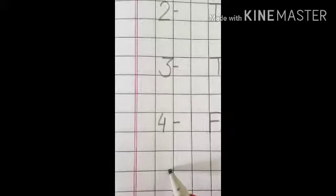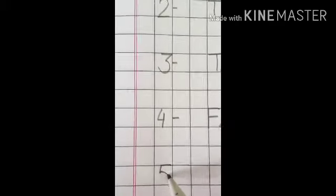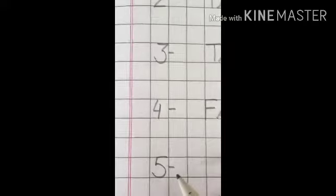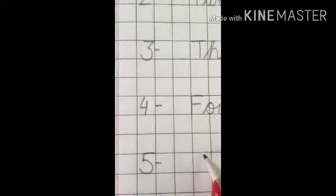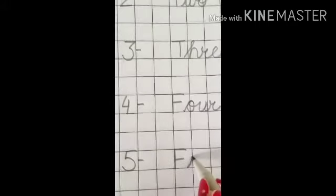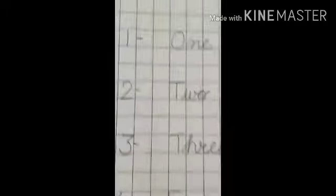Number 5. Number 5. The spelling of number 5 is F-I-V-E. 5. Now let's read them again.